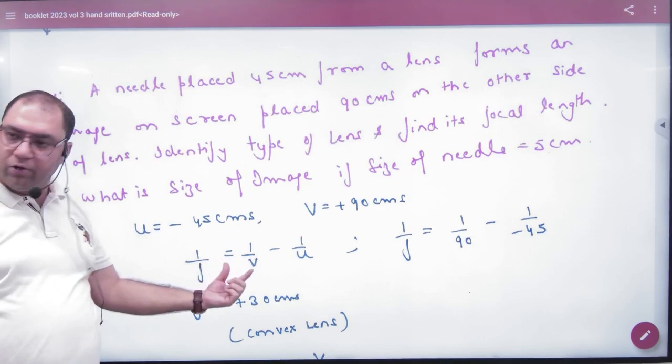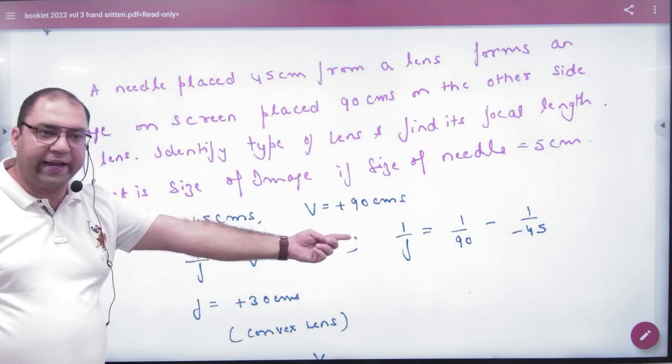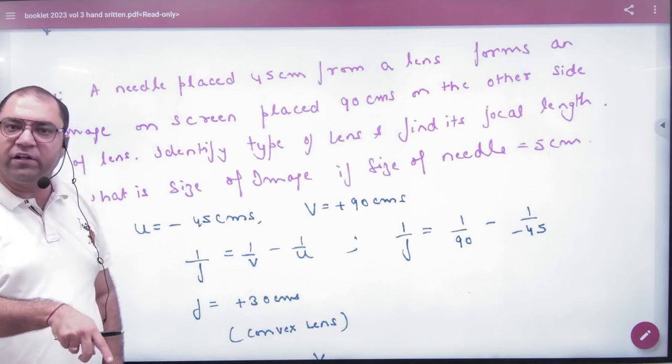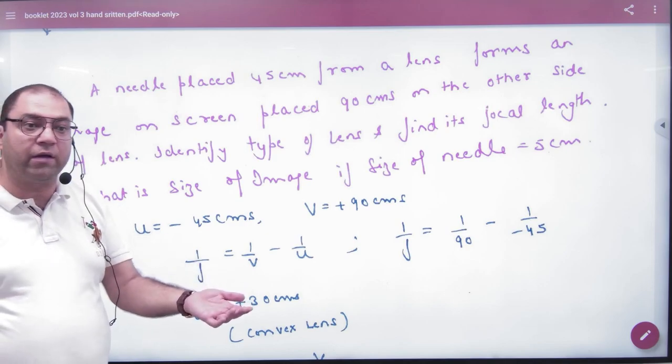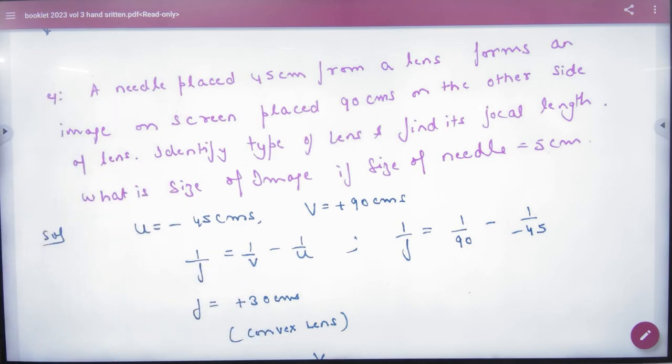Write the lens formula: 1/f = 1/v - 1/u. In the lens formula, V is positive and U is negative. Solving for f, we get positive focal length. If the answer is positive, then plus 30 is the answer. So the first answer is clear.